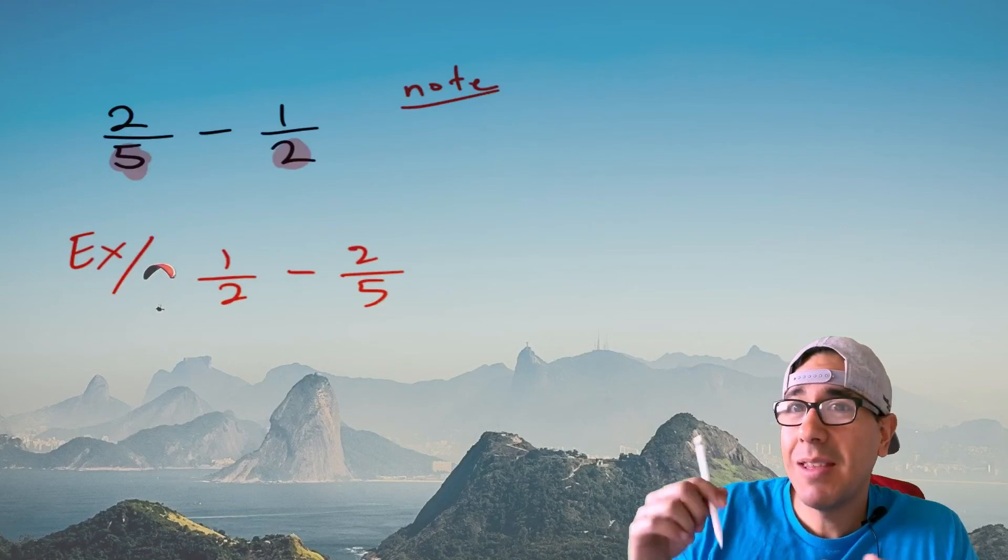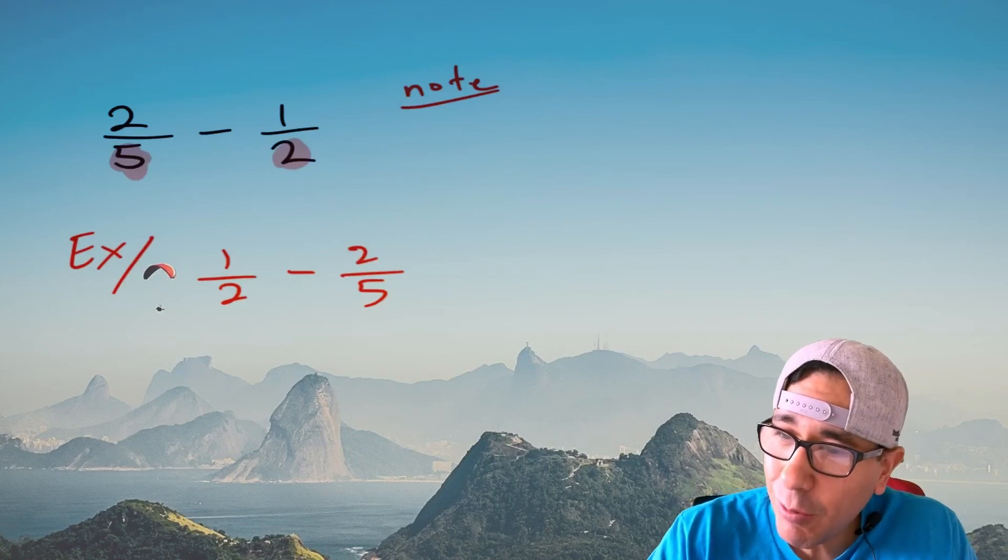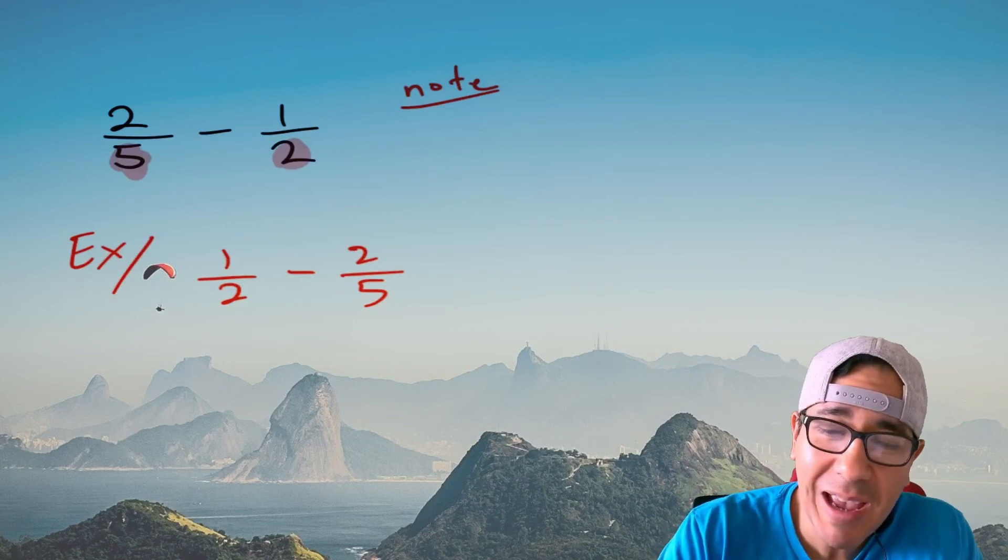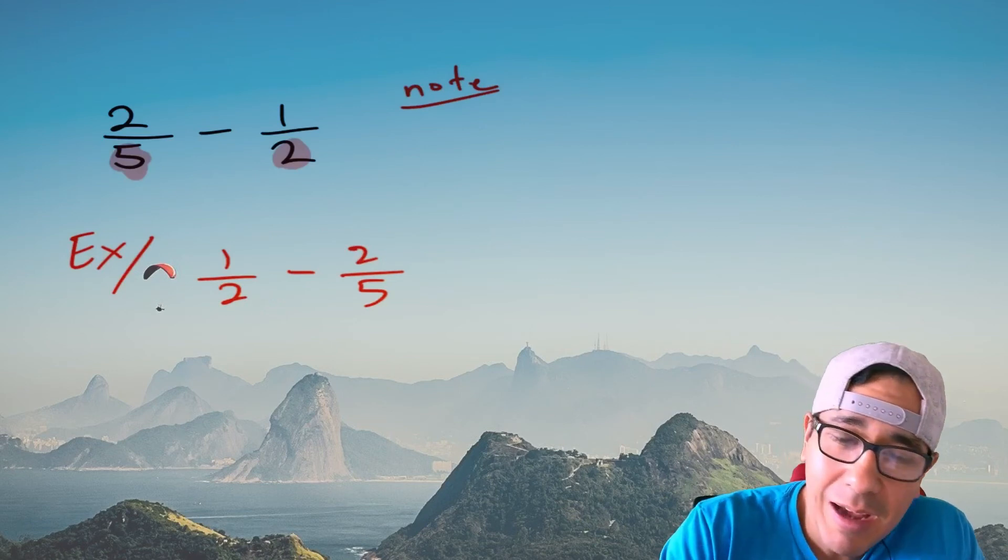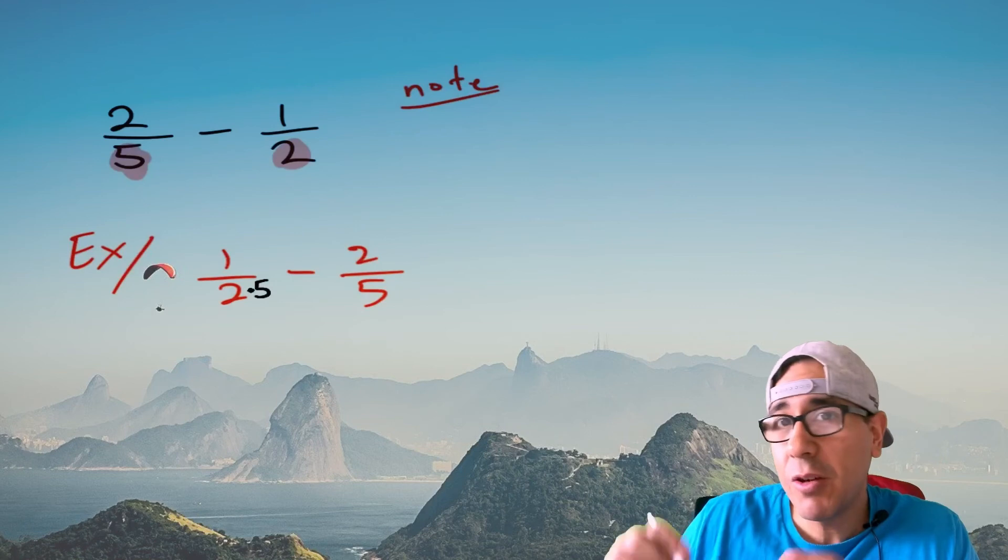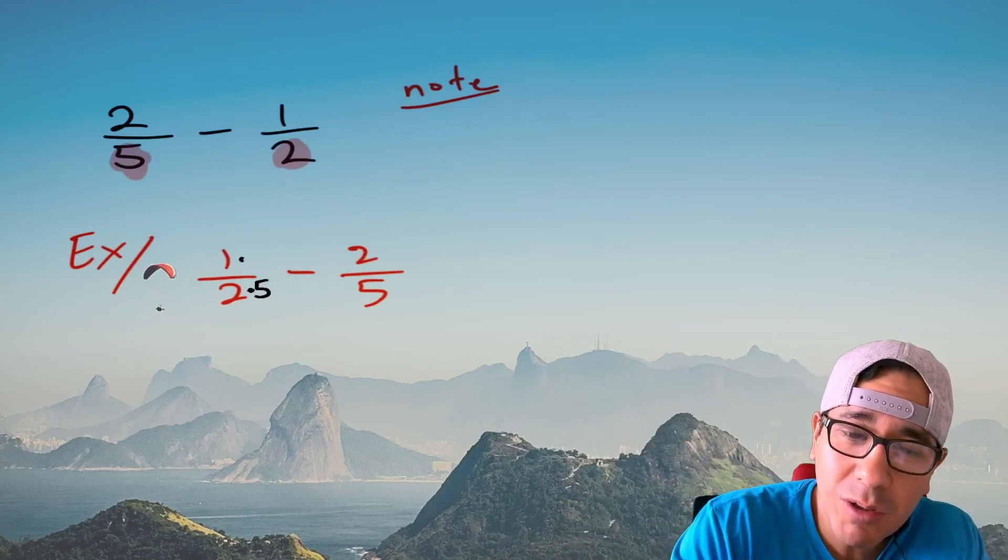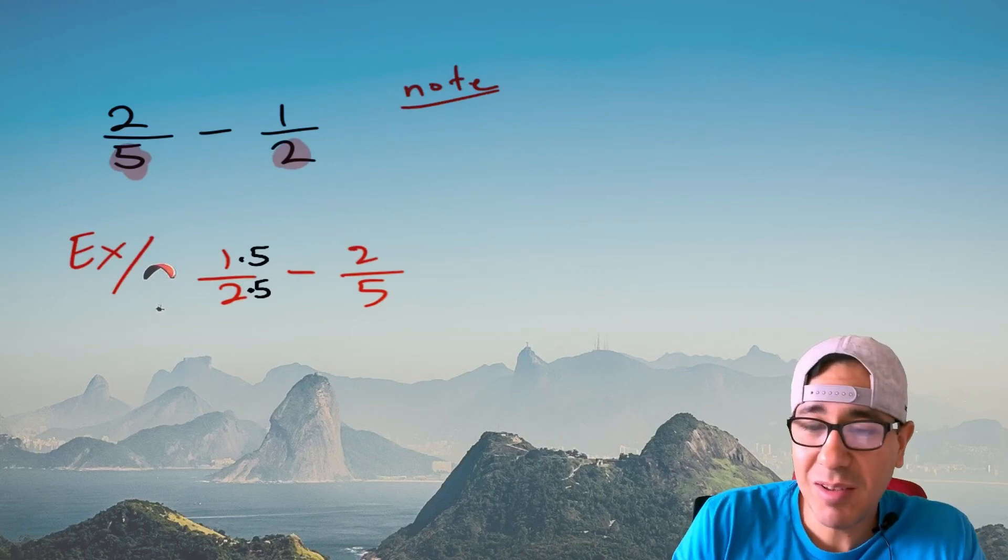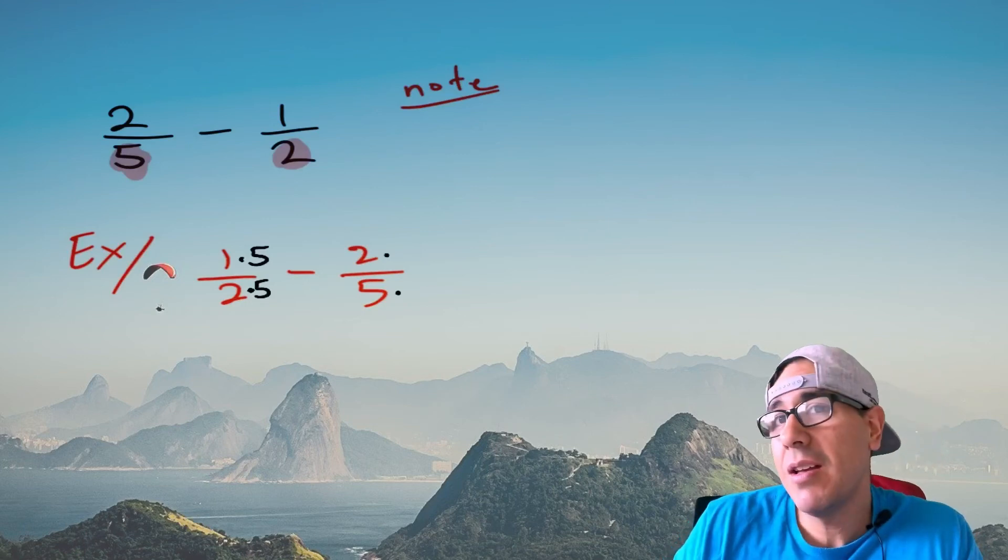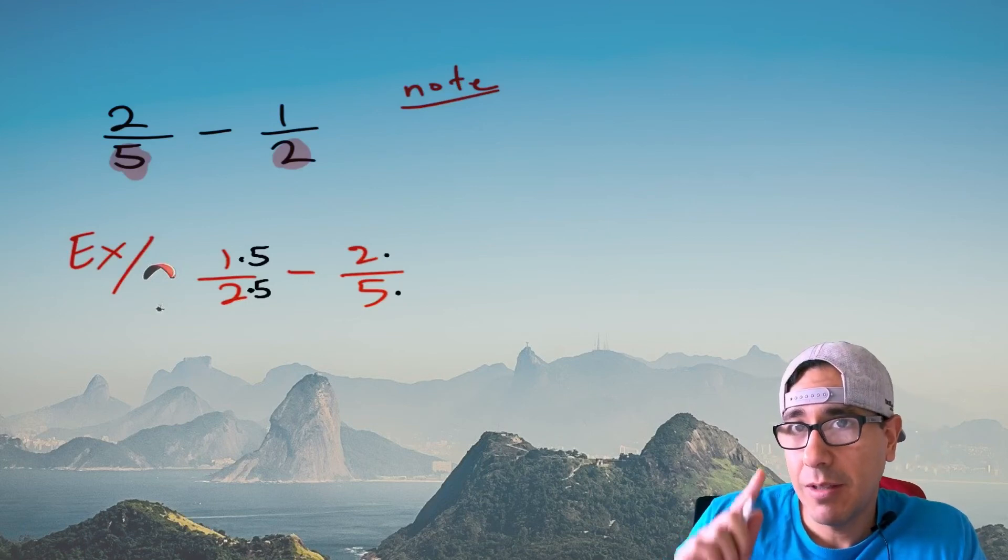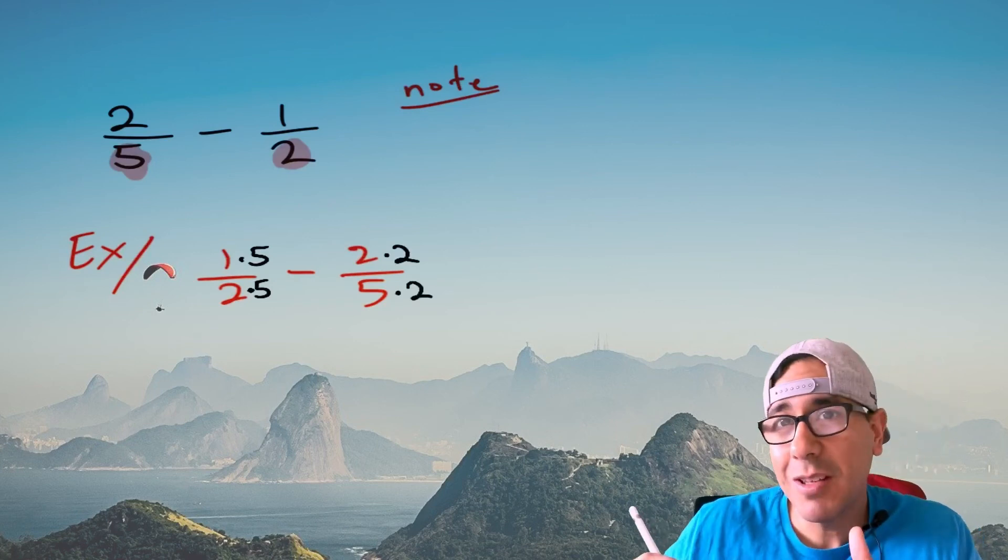So in math what other people do is they make sure they learn how to multiply first because that makes life easier. Here what we're going to do - one of my cheat codes is I ask myself two times what equals 10. Well I'm going to multiply this by five and whatever you do to the bottom you do to the top so I'm also going to multiply the top by five. And let's do this other one - this five, what do I multiply this five on the bottom by to give me 10? Good, you multiply by two and whatever you do to the bottom you do to the top.